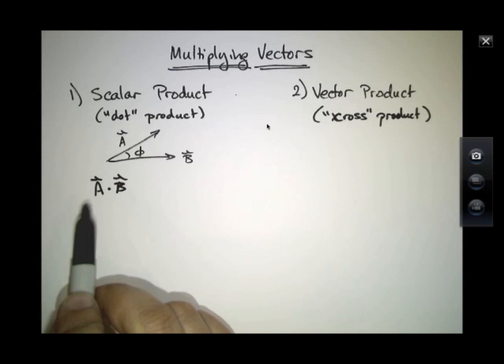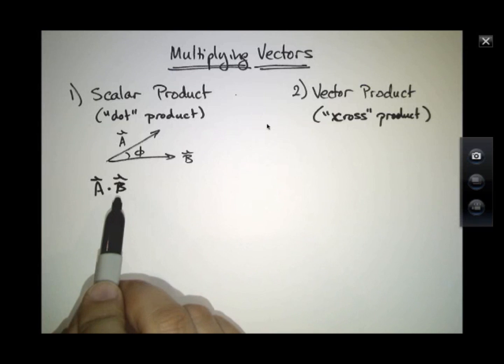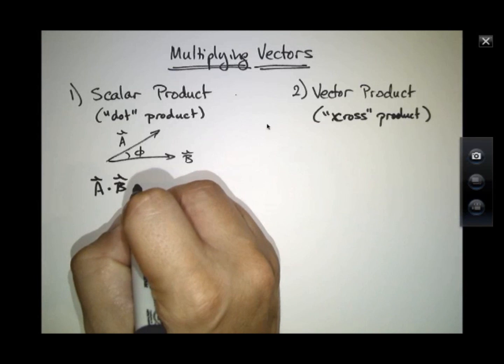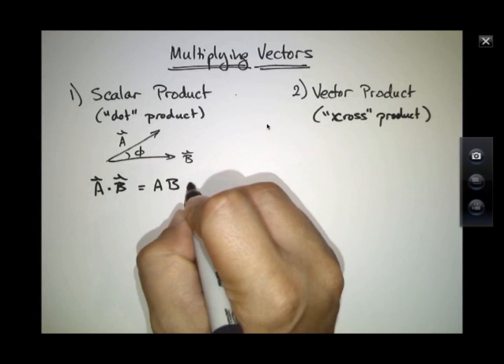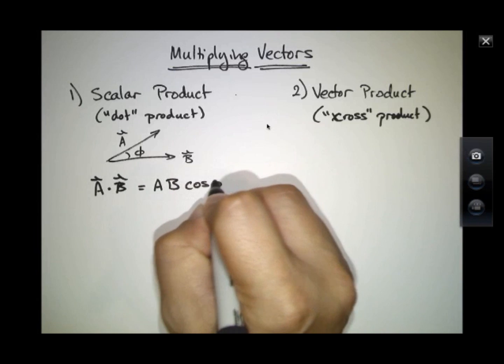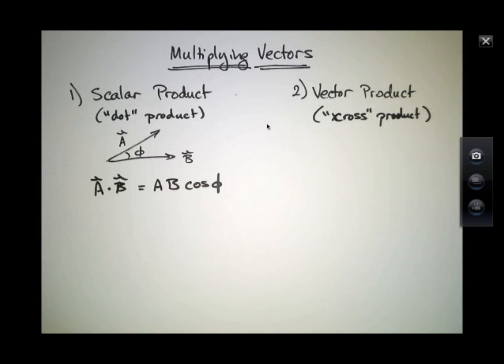So if this is five in the north direction, this is three in the east direction, it just produces a number. And the number that it produces is the magnitude of A times the magnitude of B times the cosine of the angle between them.